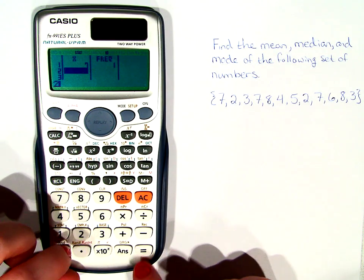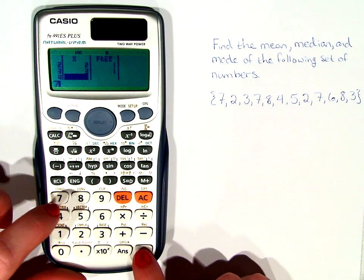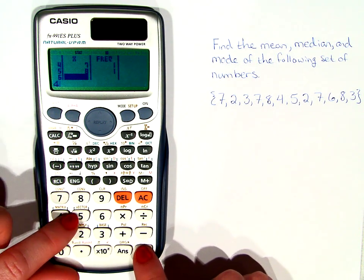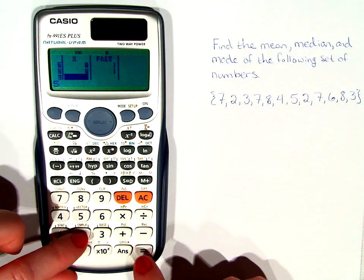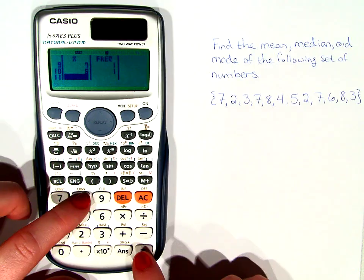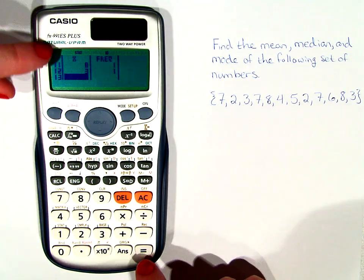2 equals, 3 equals, 7, 8, 4, 5, 2, 7, 6, 8, and 3. And you should see 12 numbers displayed.